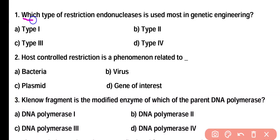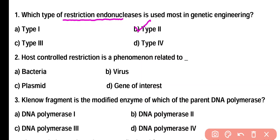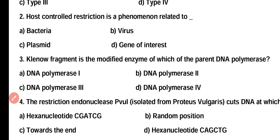Question 1. Which type of restriction endonucleases is used most in genetic engineering? Option A: Type 1, Option B: Type 2, Option C: Type 3, Option D: Type 4. Correct answer is Option B. Type 2 restriction endonucleases are mostly used in genetic engineering because they are more active in function as compared to Type 1 and Type 3.